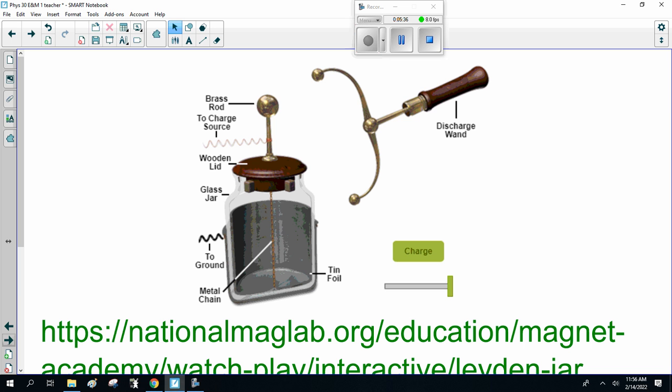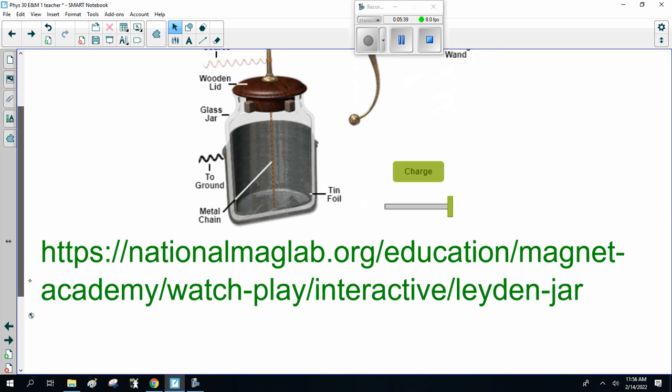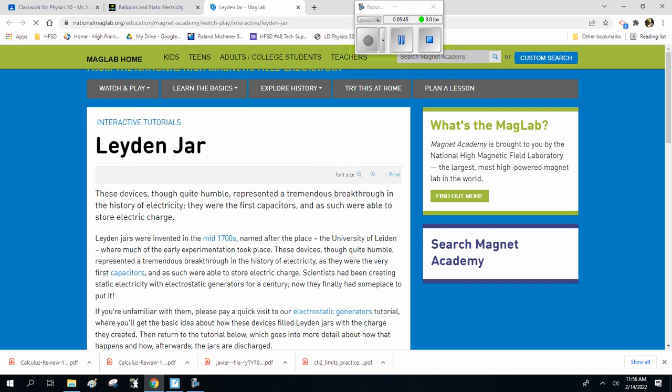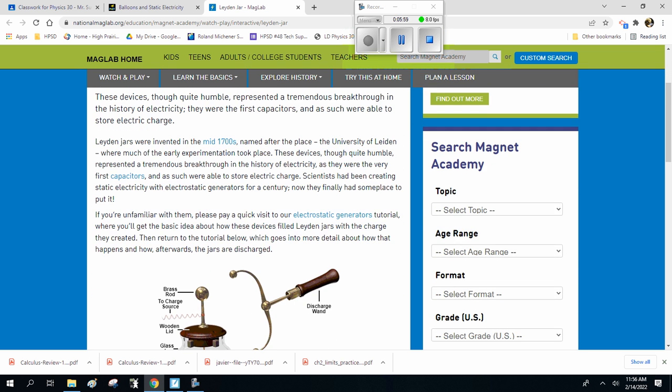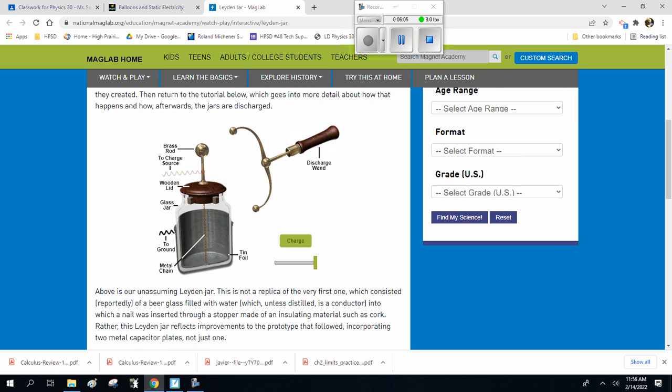I've got a couple of other apps for you to try. This is a Leiden jar. I want you to read through this. These Leiden jars represent a tremendous breakthrough in the history of electricity, the first capacitors able to store charge. They were invented in the mid-1700s. We have here, we develop it, we bring in a charge, and observe the extra electrons held inside the tin foil.